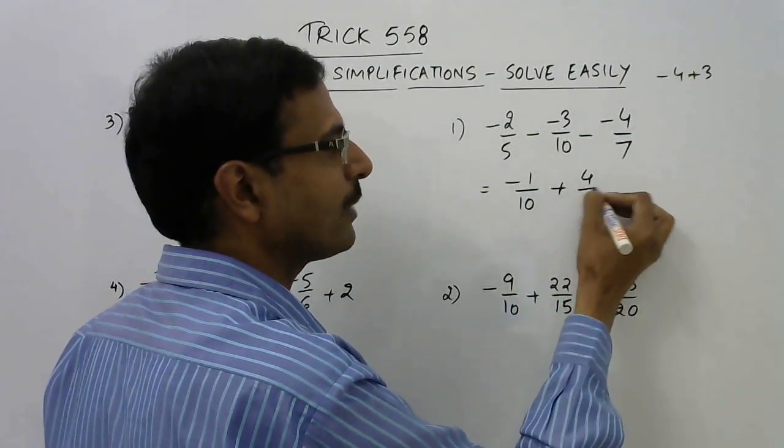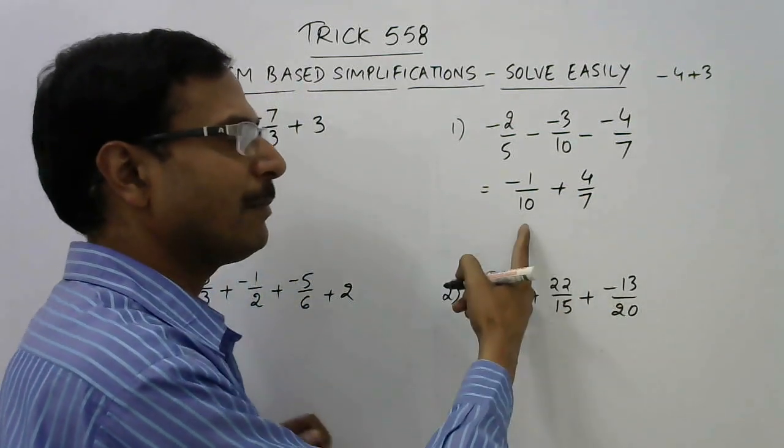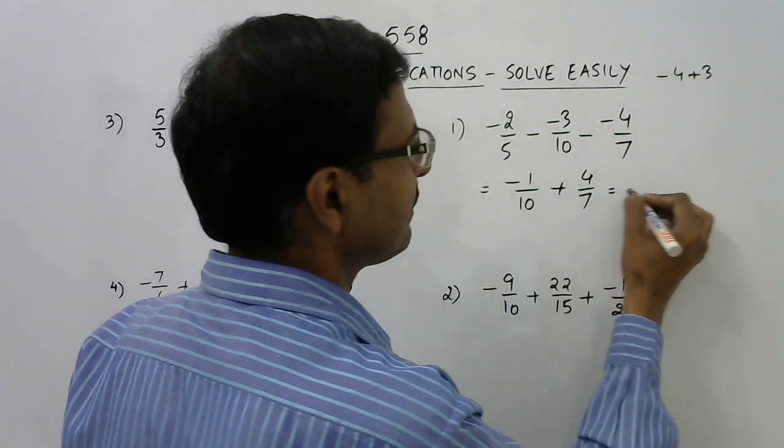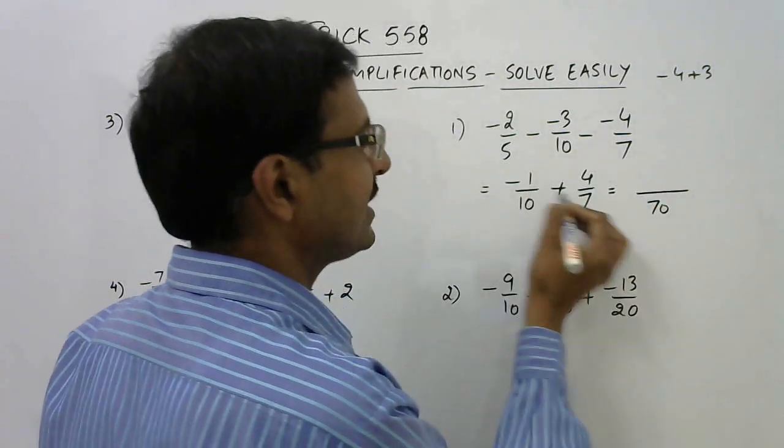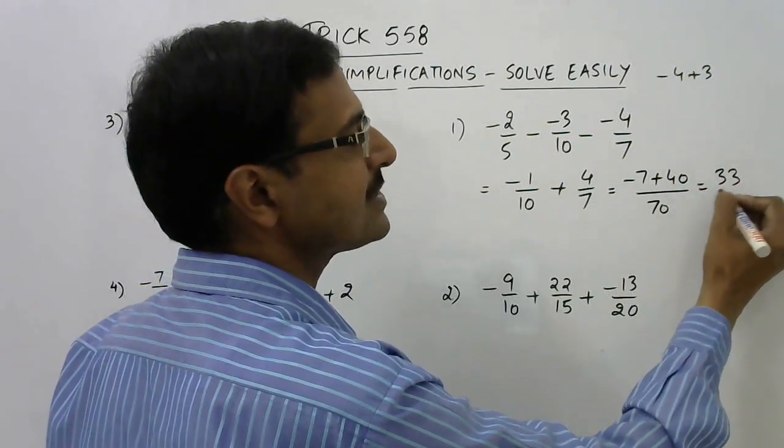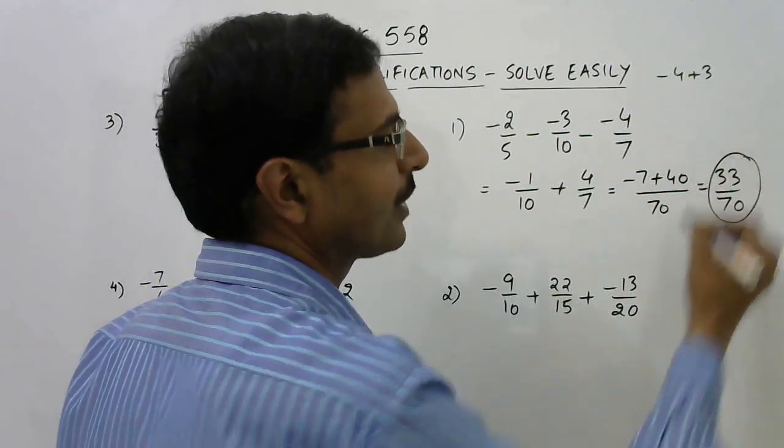Finally, we have plus 4 by 7 and now 7 is a prime number, so obviously the LCM will be the product of the two numbers. LCM is 70. Minus 7 plus 40 gives you 33 upon 70 as the answer of the first question.